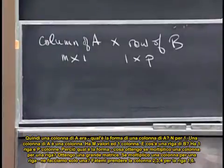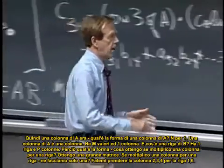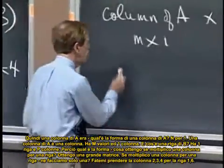And what's a row of B? It's got one row and P columns. So what's the shape, what do I get if I multiply a column by a row? I get a big matrix. I get a full size matrix. If I multiply a column by a row, I get, shall we just do one?